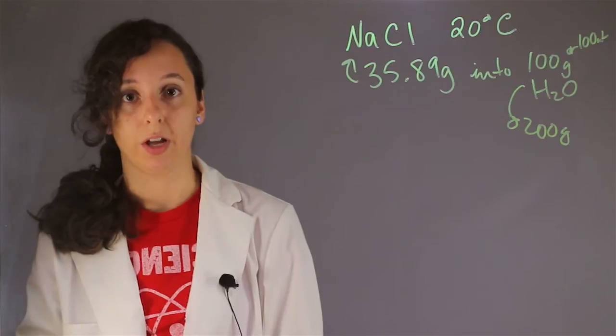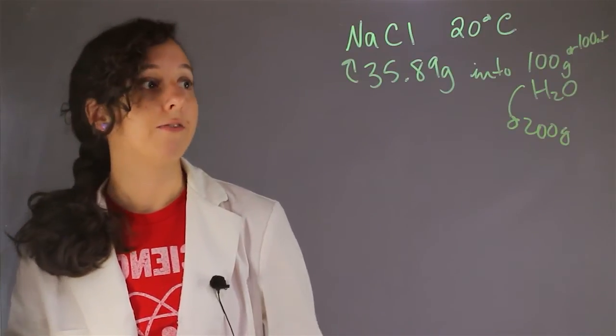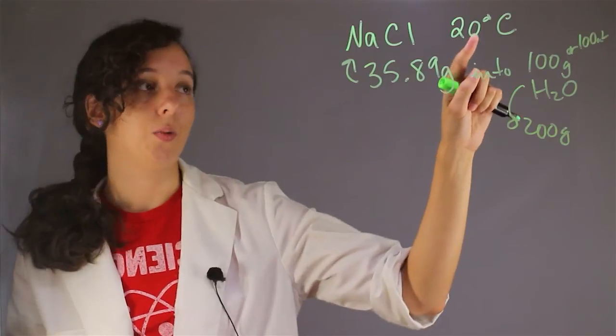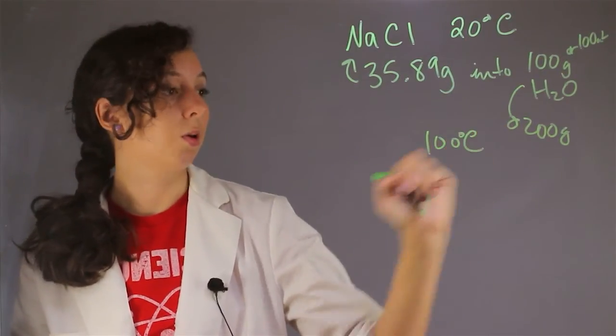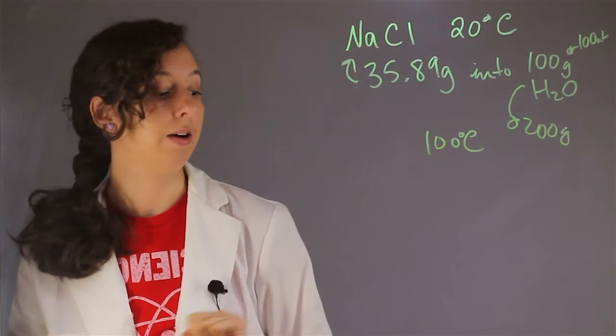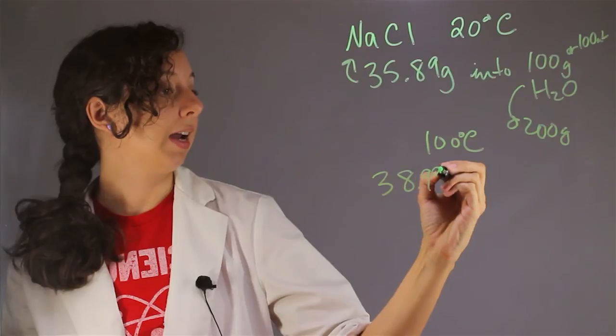So how do we increase solubility? Well, the easiest way is to increase temperature. So if this is a solubility at 20 degrees Celsius, at 100 degrees Celsius, the boiling point of water, so this is boiling water now, the solubility of salt is actually 38.99 grams.